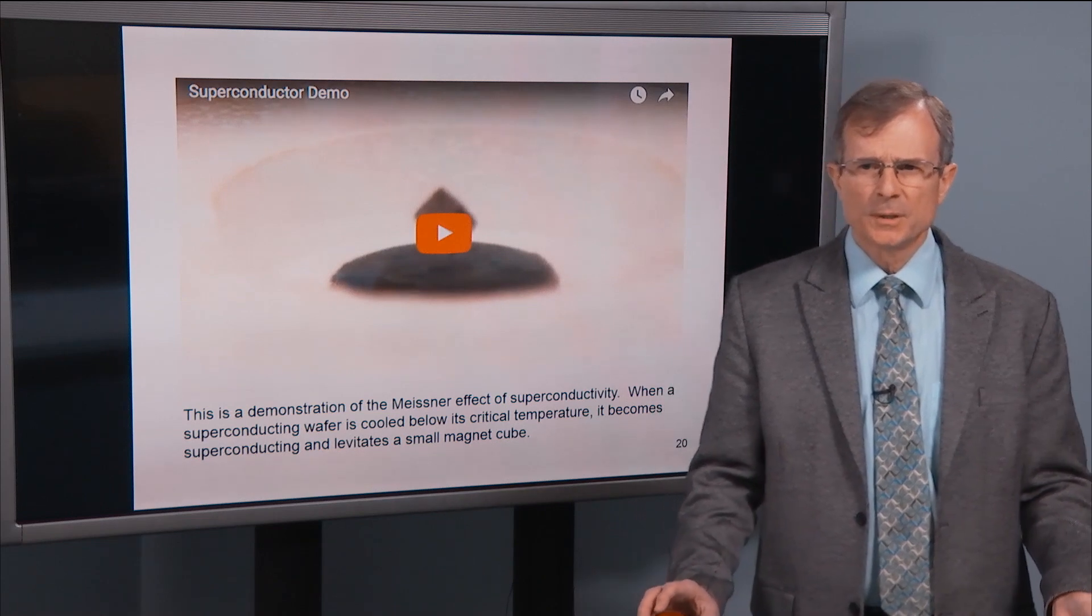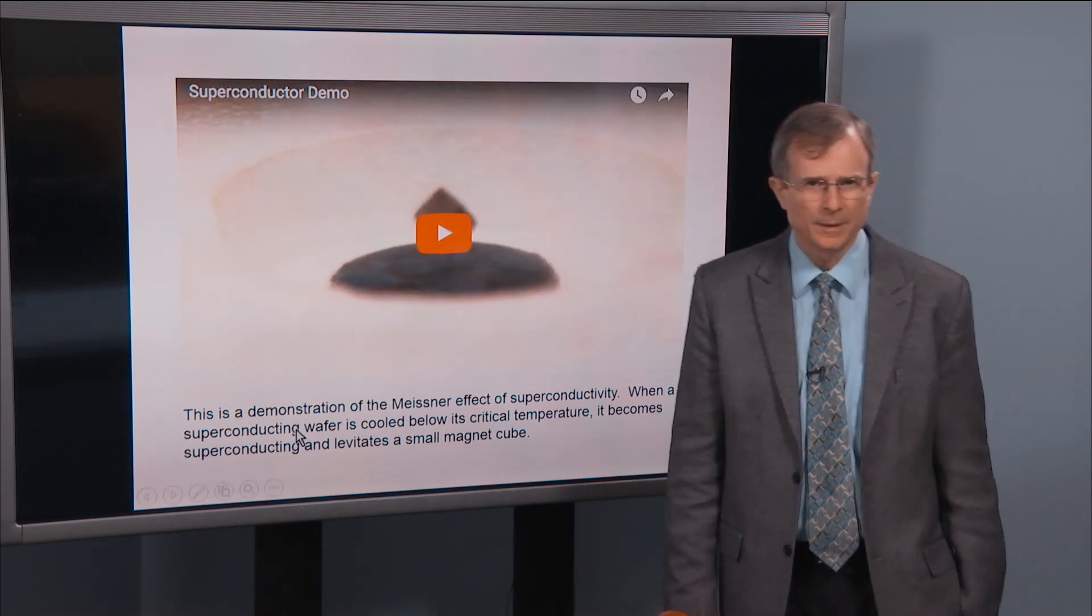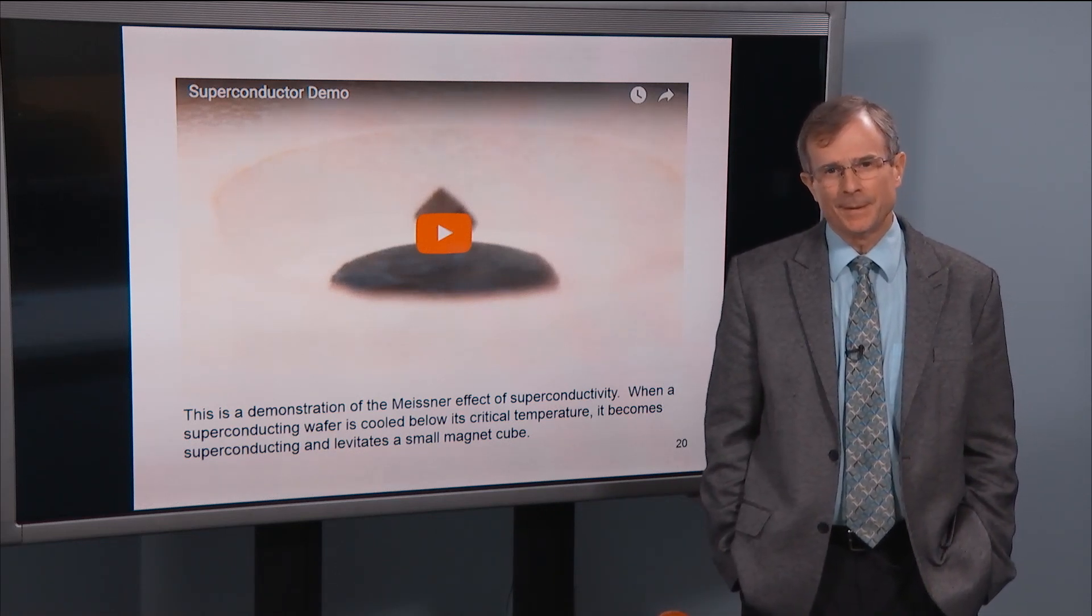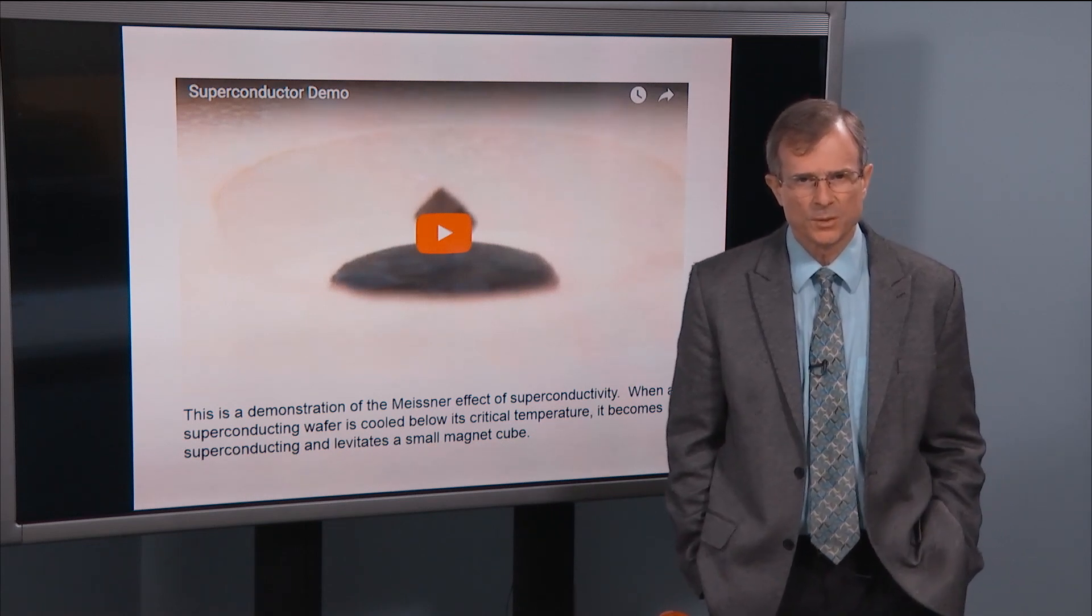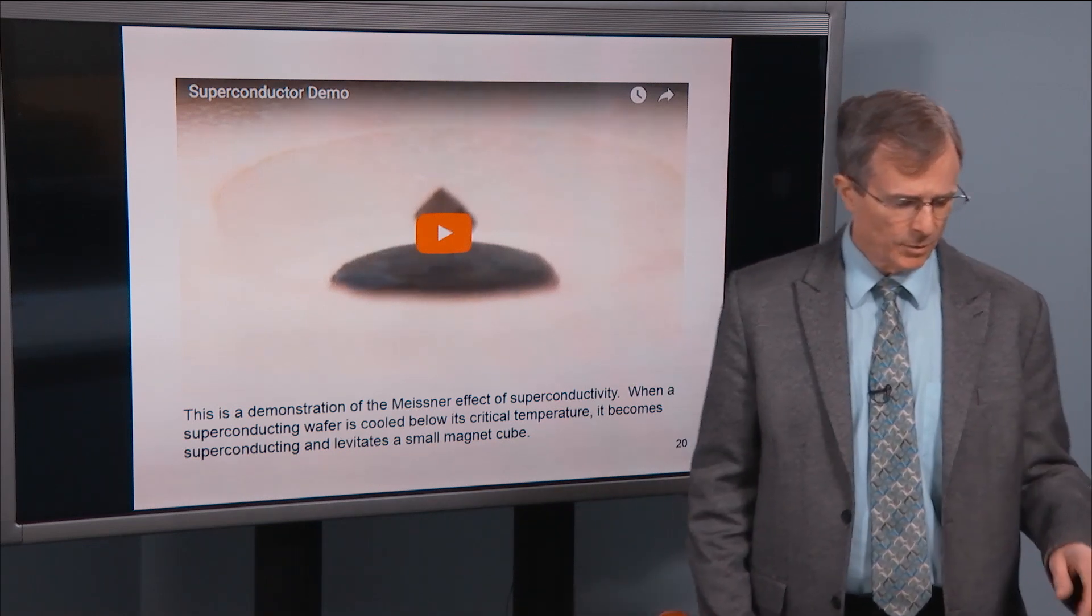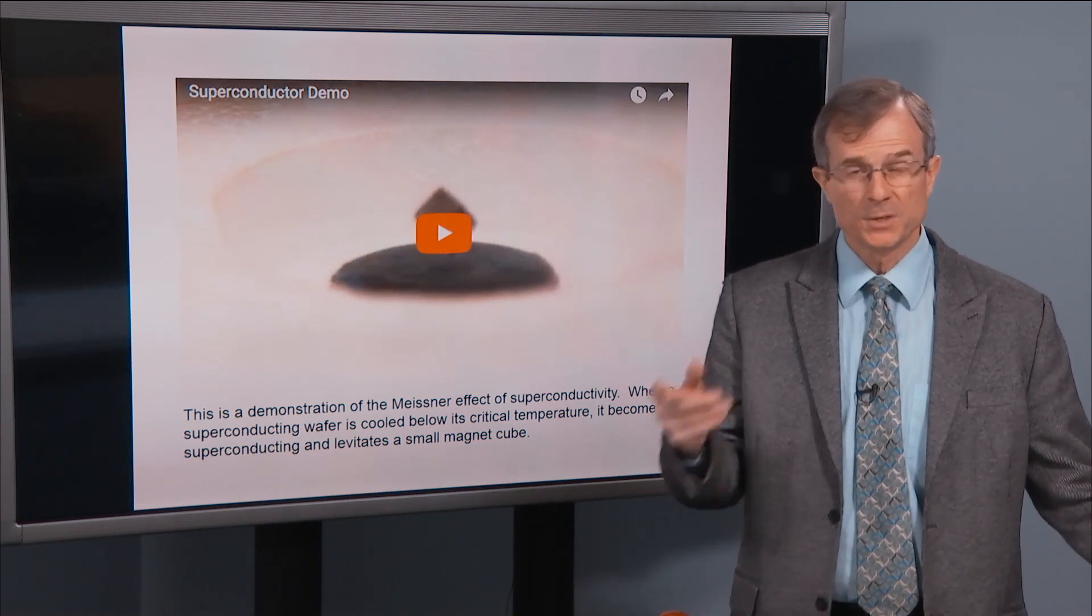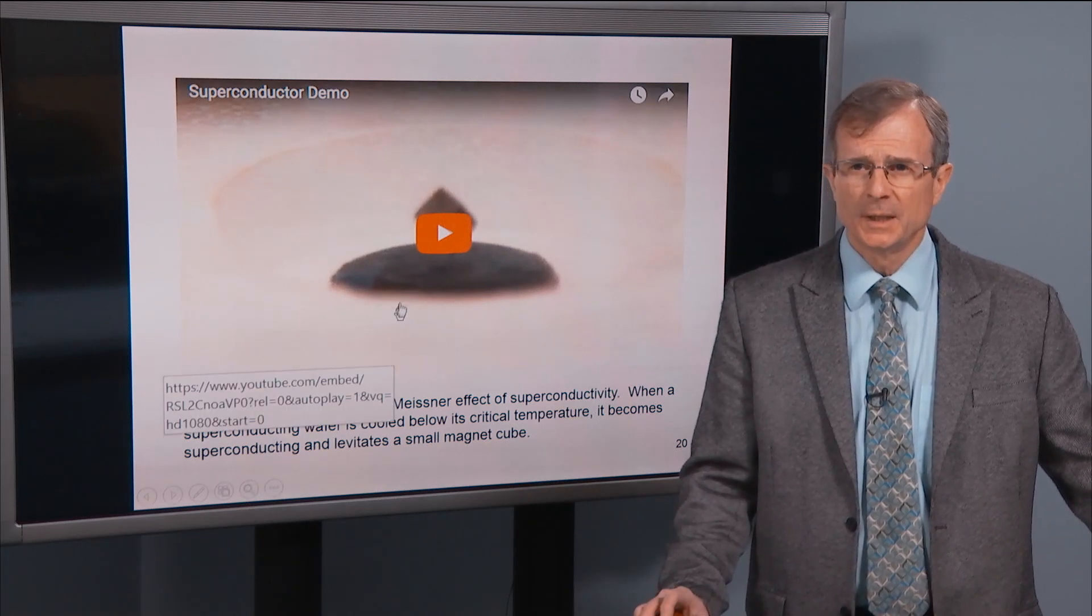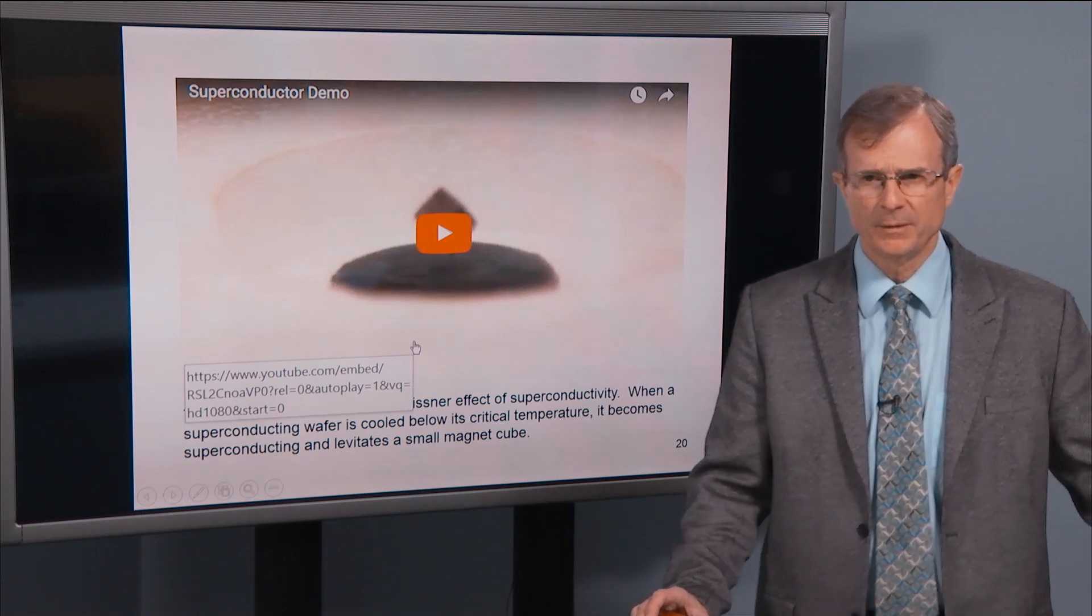Okay, this is the demonstration of the Meissner effect of superconductivity. As I hinted at the beginning of this section, some conductors offer no resistance to the flow of electricity. You can, for superconductors, you can put a current in a loop of wire and it will stay in that loop for years with no degradation in the current. And this is a demonstration of something called the Meissner Effect of Superconductivity.